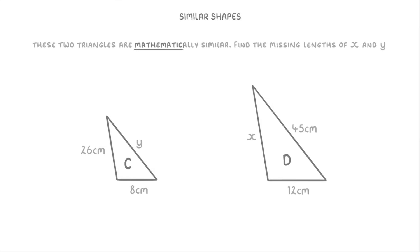Let's have a go at another one. This time we're told that these two triangles are mathematically similar and we're being asked to work out the lengths of the missing sides x and y. The term 'mathematically similar' just means similar like we've been talking about throughout this video, so whenever you hear 'similar' or 'mathematically similar' in a maths paper they both mean exactly the same thing.